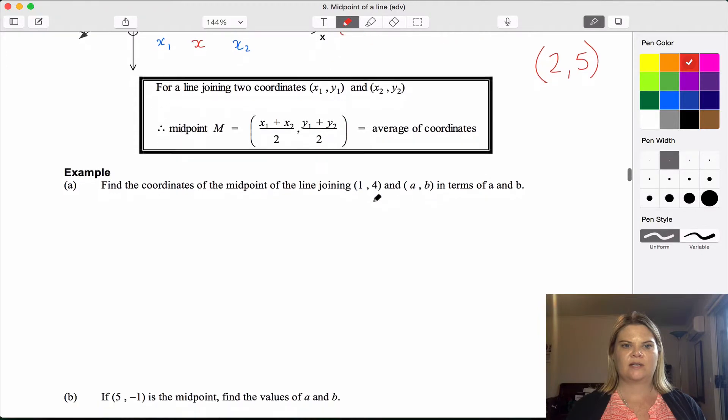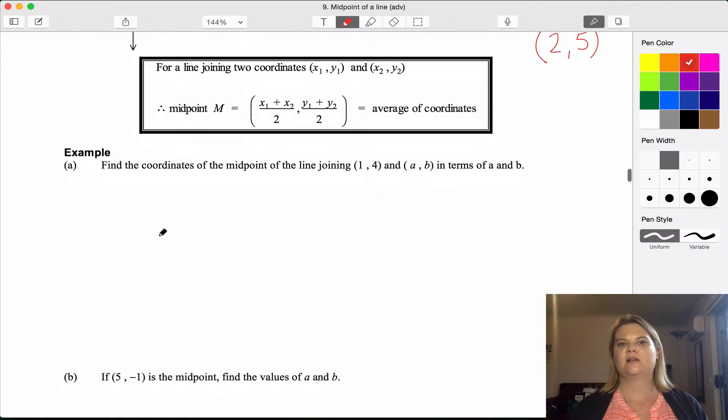Below here I've got an example with part a and part b. I'd like you to pause the video now and have a go at these two. Just a quick reminder: when it says in terms of a and b, it means that your answer will have an a and a b in it. So make sure whatever answer you give has an a and a b in it. You don't need to simplify it further than that. Pause the video now and have a go at these two problems.